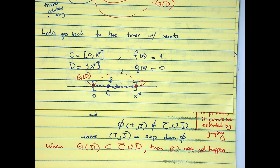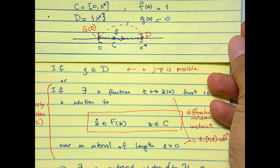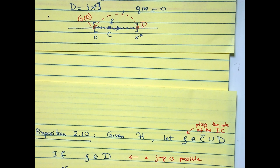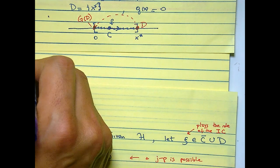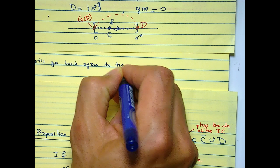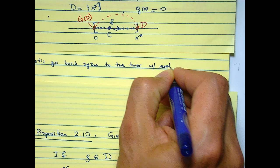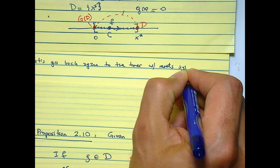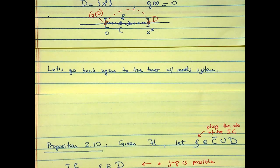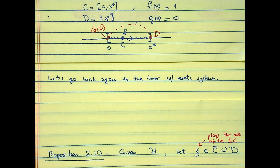Okay, so what do you think about this example? Maybe I should write it so we have it. Let's see. Let's go back to the timer with the set system. These are the objects that define it up here: C, F, D, G.